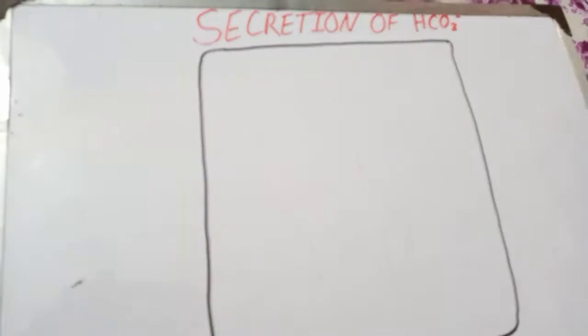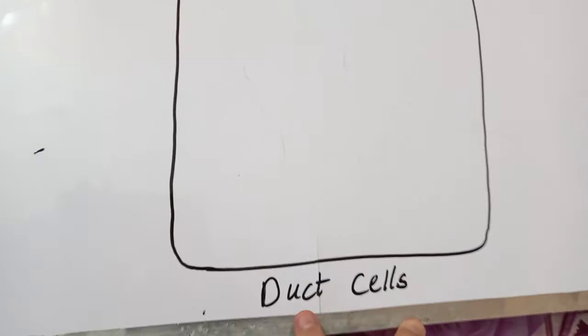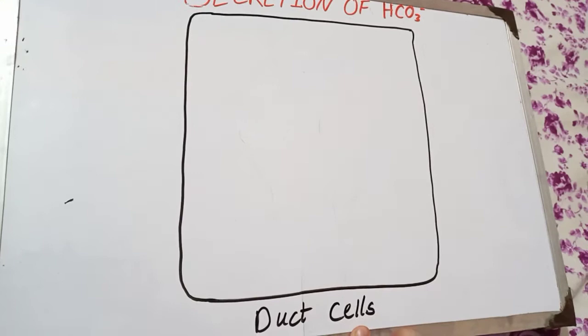Hello everyone, today we will be talking about the secretion of bicarbonate ion in pancreatic cells. You have to remember that bicarbonate ions are always released by the duct cells of the pancreas, the ductal epithelium of the pancreas, not by the acini cells. Acini cells release only the pancreatic enzymes.